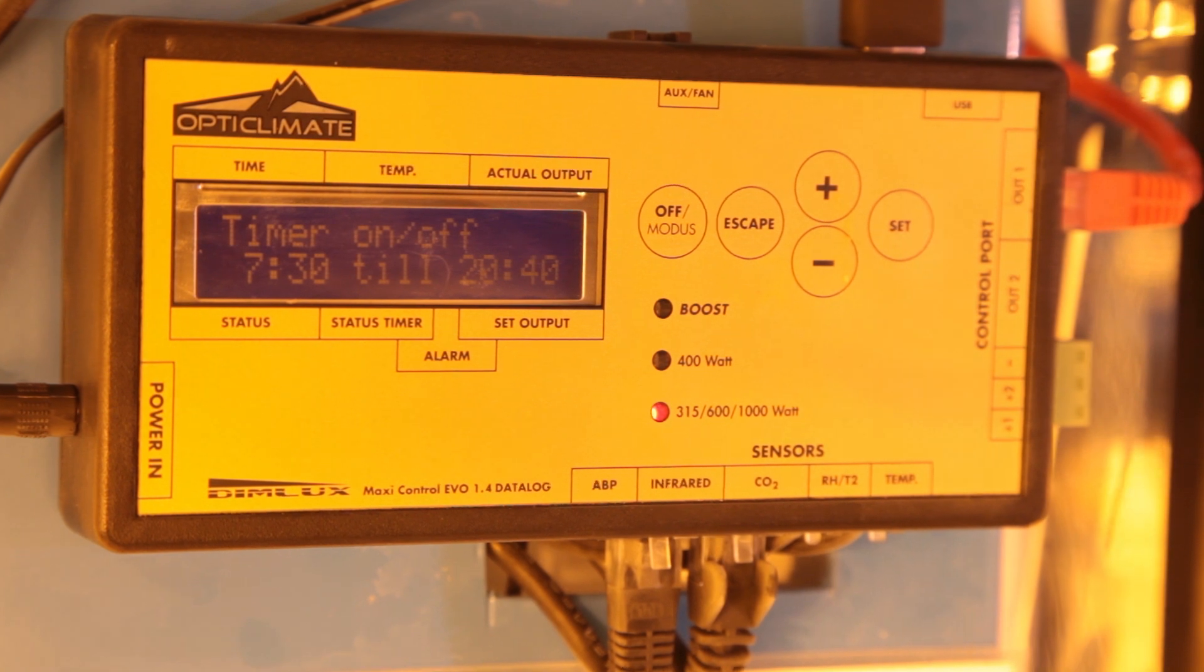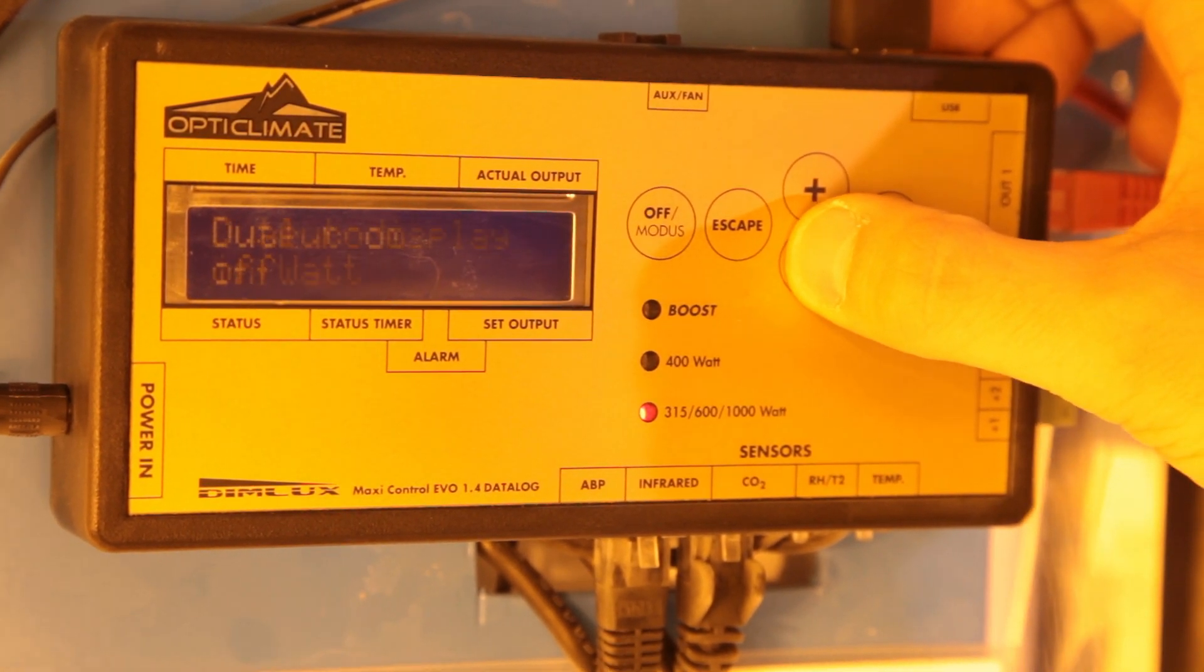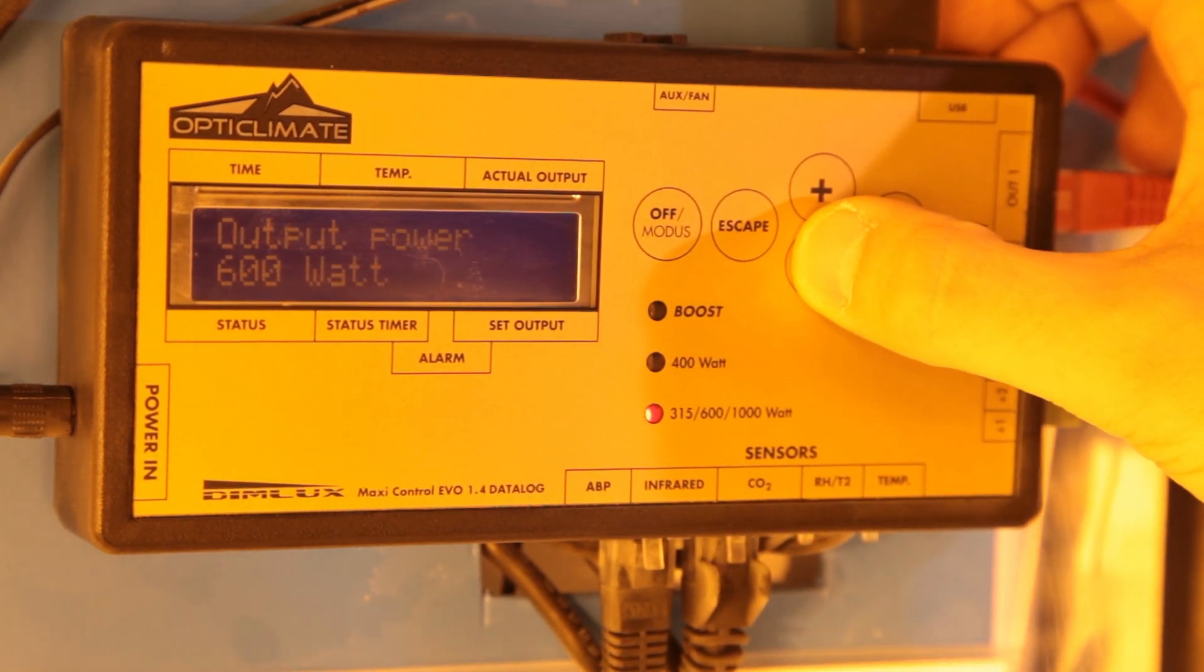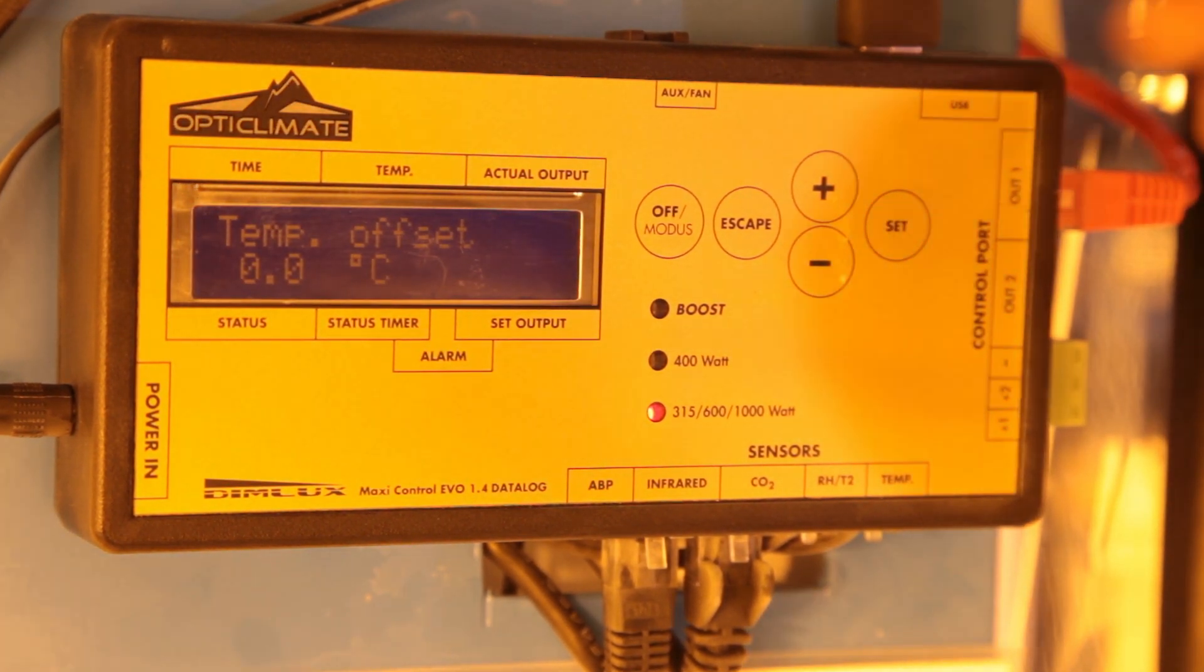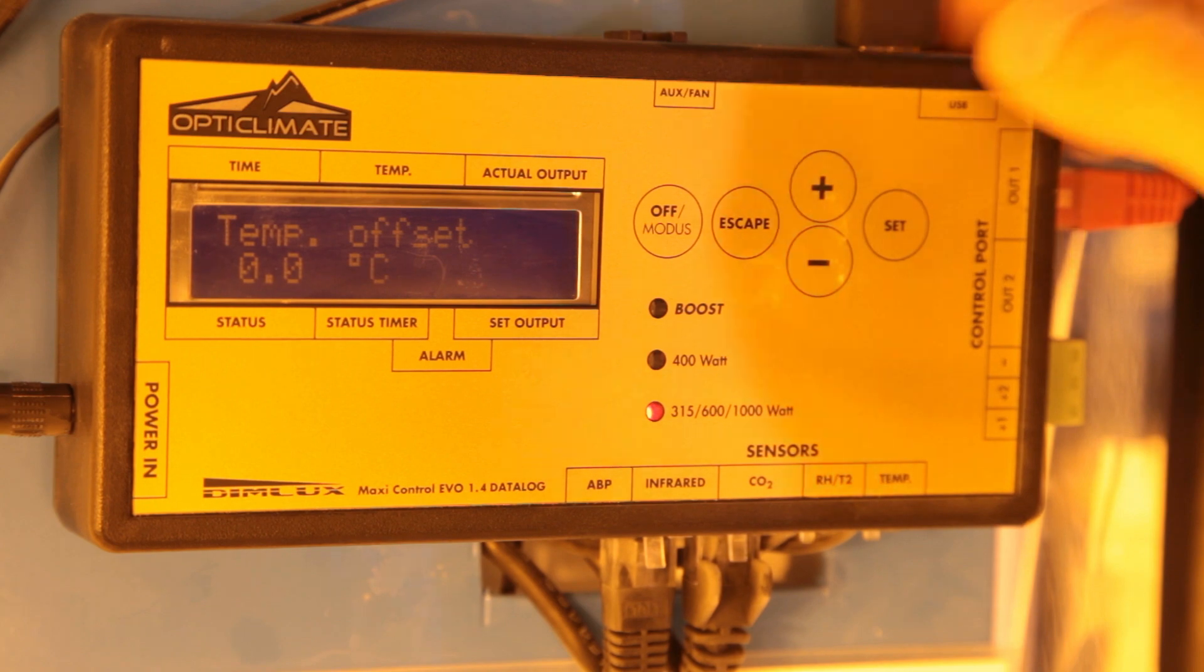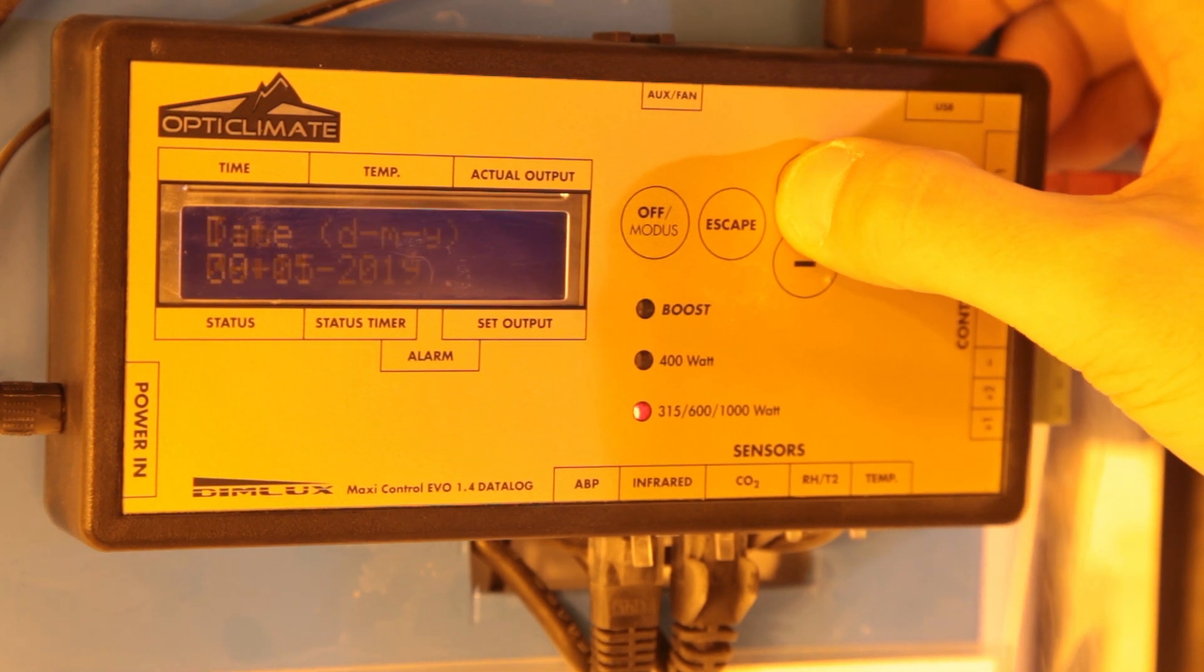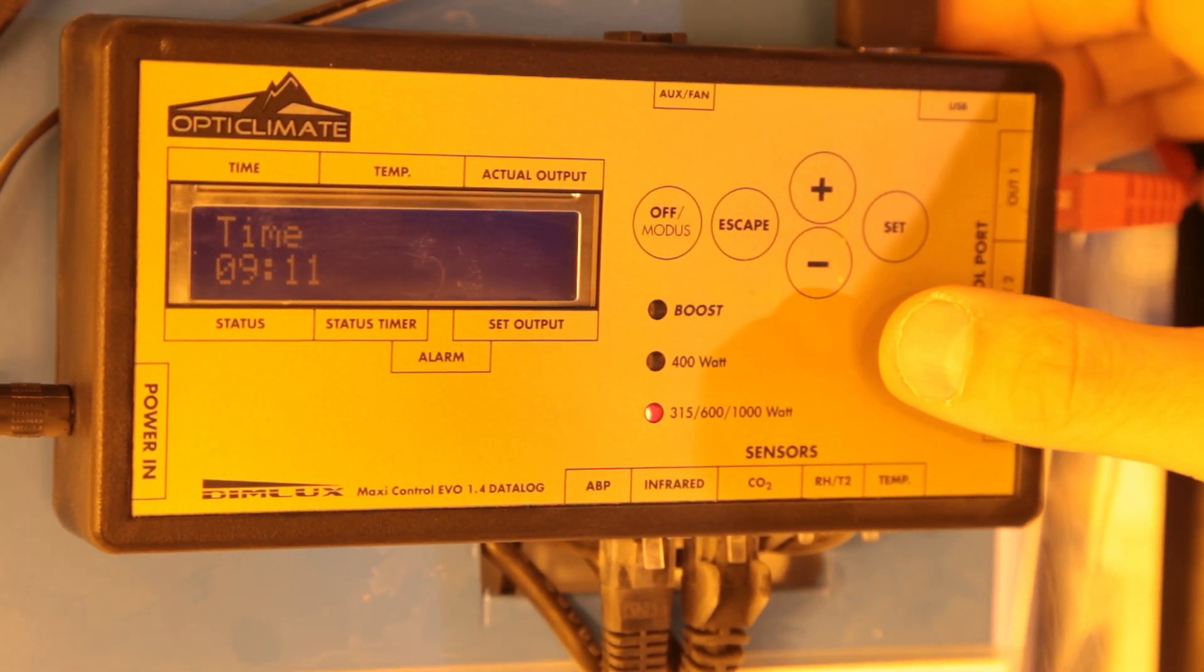Pressing set will take you to a settings menu and this settings menu is going to be different depending on the display mode screen that you're on. So for instance use the escape button to navigate to the lighting screen, hit set and you'll be taken to the lighting settings. You can then use the up and down buttons to scroll through a list of options. In this case the first option is time. To set the time hit the set button again and use the plus and minus buttons to adjust the setting as required.